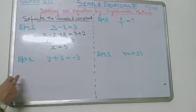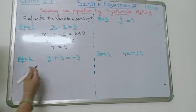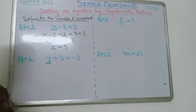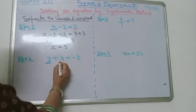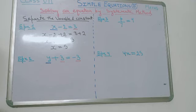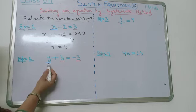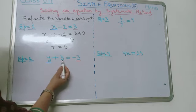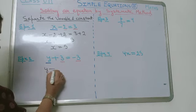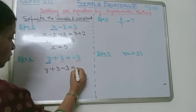Next, consider the example y plus 3 is equal to minus 3. Here, the variable is y and constant terms are 3 and minus 3. So we have to separate this 3 from y. To remove this 3, we have to subtract 3 from both sides.